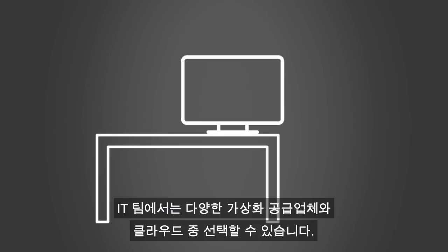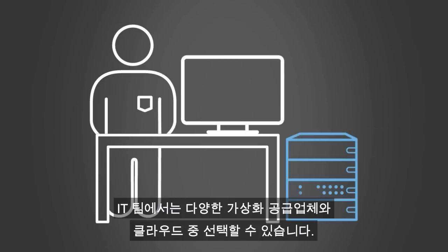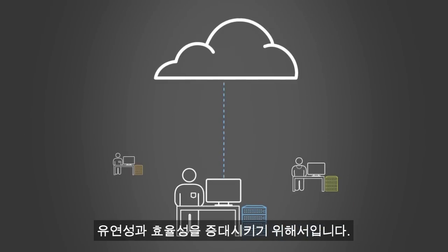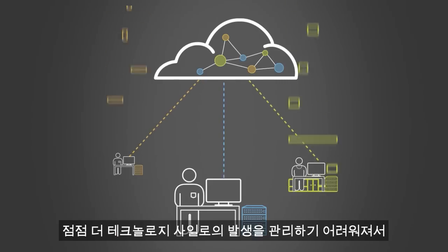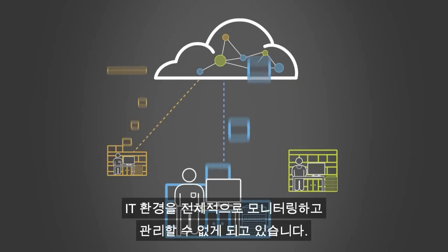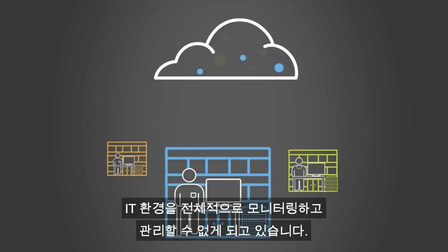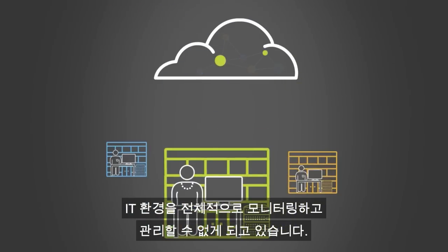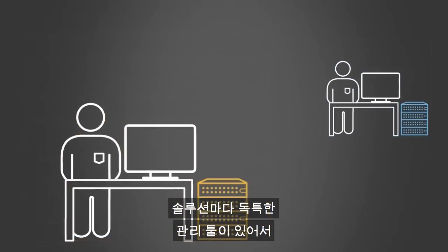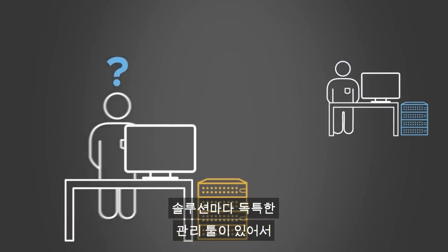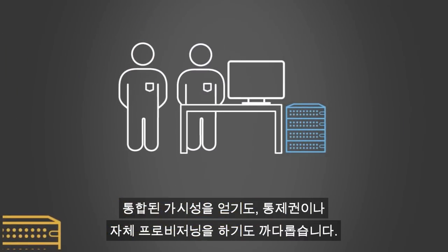Your IT team may have chosen various virtualization vendors and cloud offerings to gain greater flexibility and efficiencies. However, your heterogeneous infrastructure has quickly become more difficult to manage, creating technology silos that prohibit you from fully monitoring and managing your IT environment. Each solution has its own unique management tools, making unified visibility, control, and self-provisioning difficult to achieve.